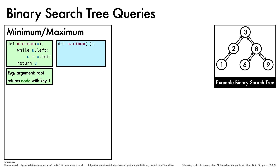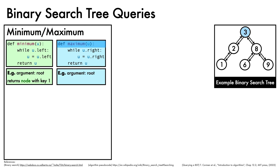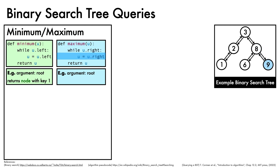Finding the max is symmetric. While the node has a right child, we move down to it. When the while loop is done, we return the node. If we call this with the root of the tree as the argument, we first check that it has a right child. It does, so we move down to the right. We do the check again, find another right child, and move down. This time, we find no right child, so we break out and return the node with key 9.